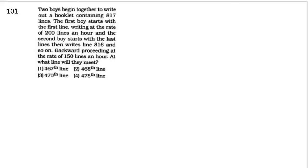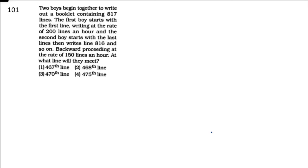Hello students, now we will solve question number 101. In this question, two boys begin together to write out a booklet containing 817 lines. The first boy starts with the first line, writing at the rate of 200 lines an hour. The second boy starts with the last line, then writes line 816, and so on backward, proceeding at the rate of 150 lines an hour. At what line will they meet?